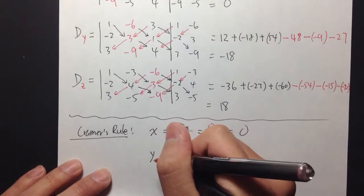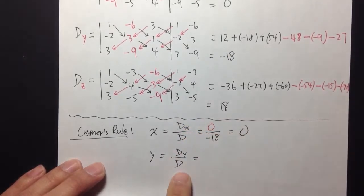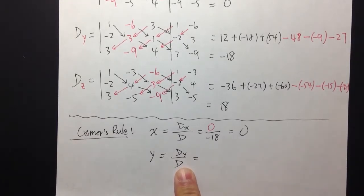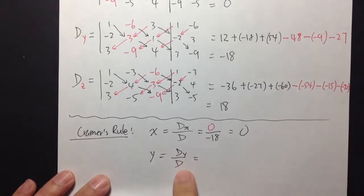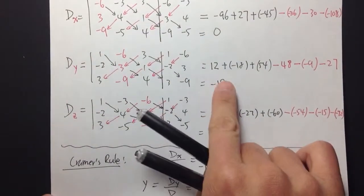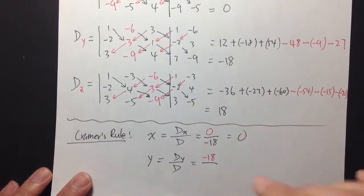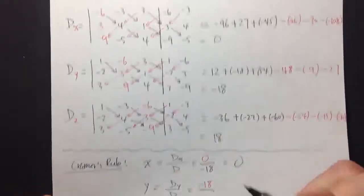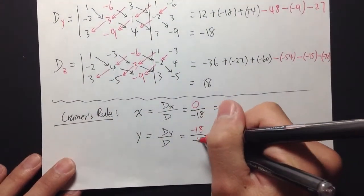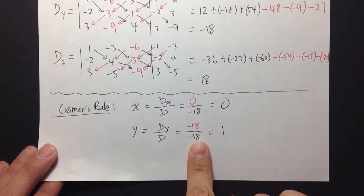Next, y is equal to dy over d. As you can see, we always put the determinant d in the denominator. So dy is equal to negative 18, and d is again negative 18. We get a positive 1, right? Negative 18 divided by negative 18 is equal to 1.